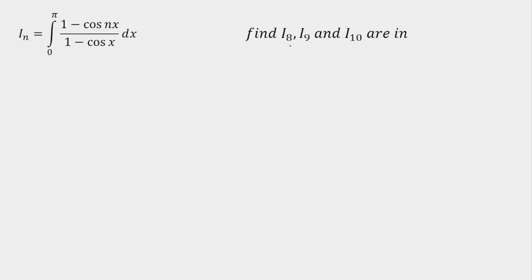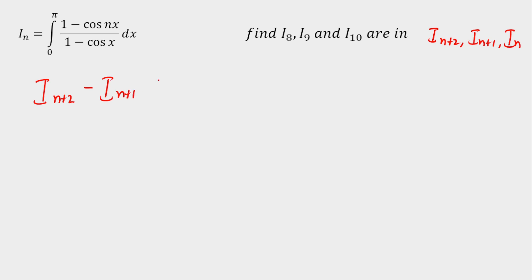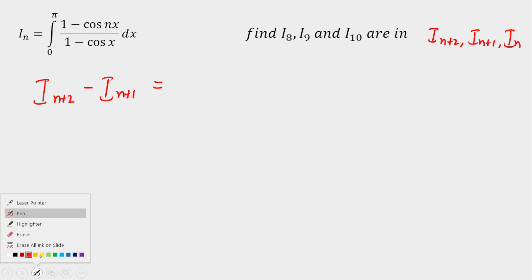From the given question, I have to find the relationship between three consecutive terms I(8), I(9), and I(10). So I'll find the relationship between I(n+2), I(n+1), and I(n). Once I get the relation, I'll simply put n = 8. I'm going to start with I(n+2) minus I(n+1) and find the difference — I'll explain why shortly.